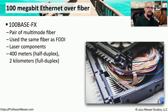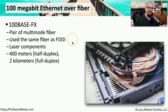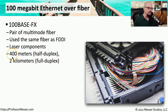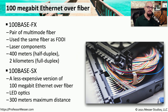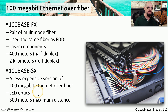Just as there are Ethernet standards for copper cabling, there are also Ethernet standards for fiber. For 100 megabit Ethernet over fiber, you can use the 100BASE-FX standard, which uses a pair of multimode fiber — the same fiber type used in older FDDI technologies, allowing a migration path from FDDI to 100BASE-FX. This standard uses lasers and supports half-duplex up to 400 meters and full duplex up to 2 kilometers. A less expensive alternative, 100BASE-SX, uses LED optics and is limited to 300 meters.